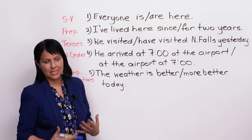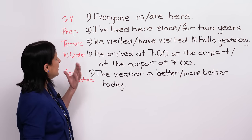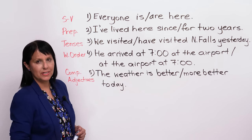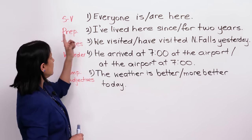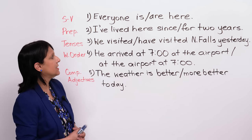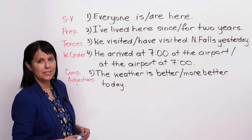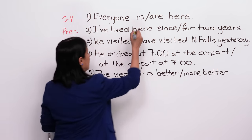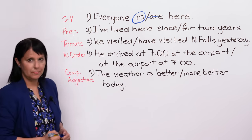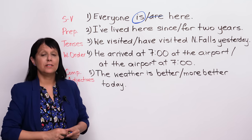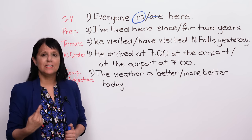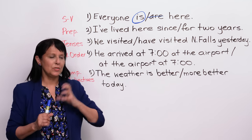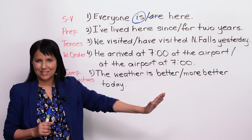So let's go through these common mistakes. Number one: 'Everyone is here' or 'Everyone are here' — what's correct? This is a question of subject-verb agreement. It should be 'Everyone is here.' Everyone, someone, anyone, no one — these are all singular, and that's something that is always true. Once you learn that, you know you can apply it always.